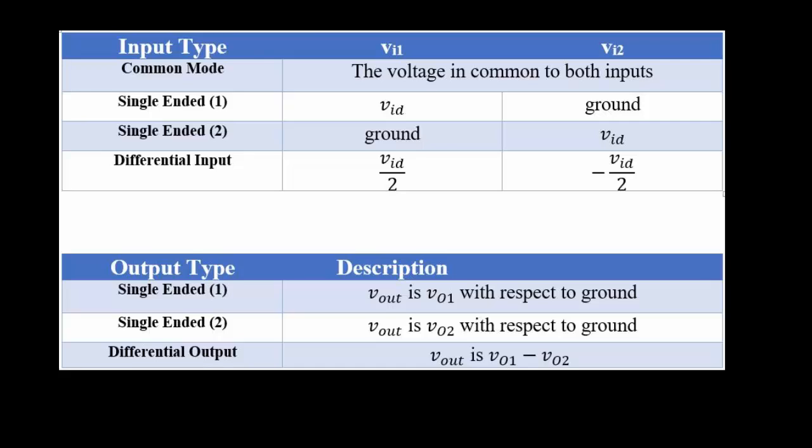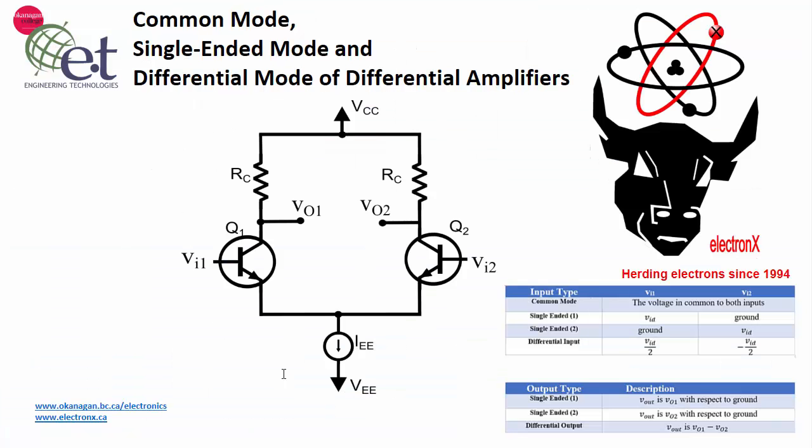So this was just a brief overview to show you the different types of inputs and outputs you can have on a differential amplifier. And we will apply these to this type of BJT-based differential amplifier in the future. Thanks for listening, and I'll see you in the next video.